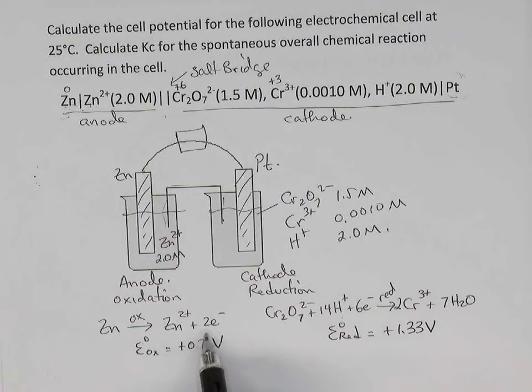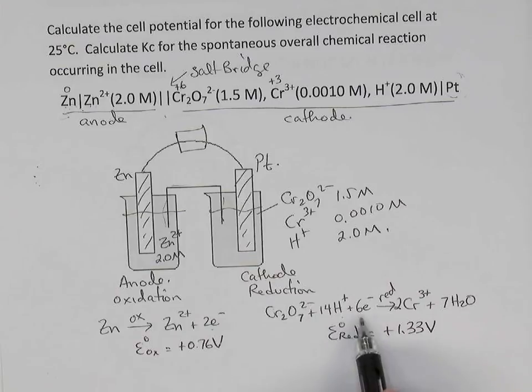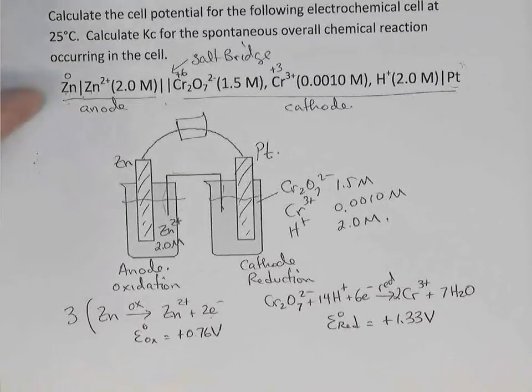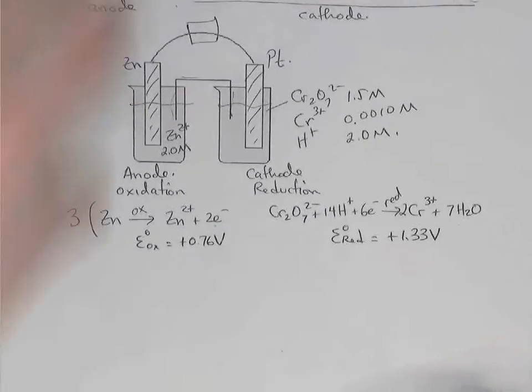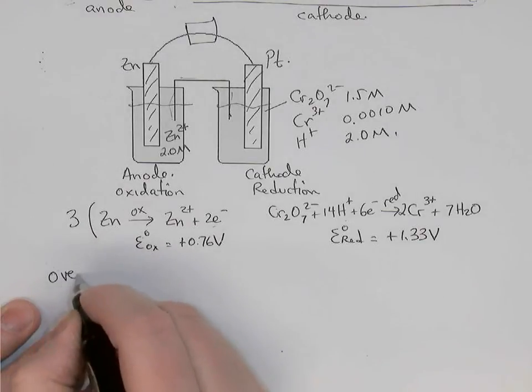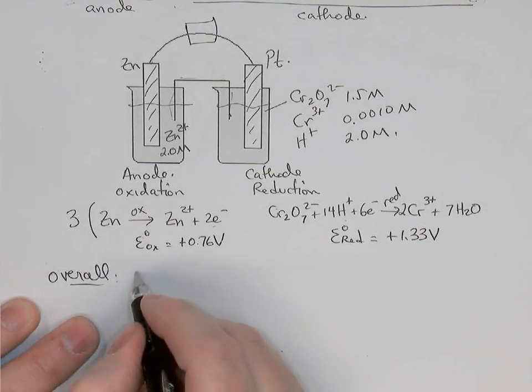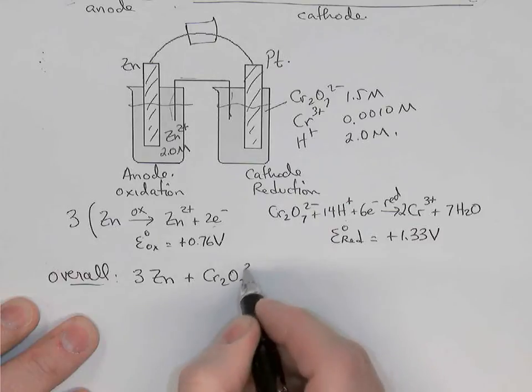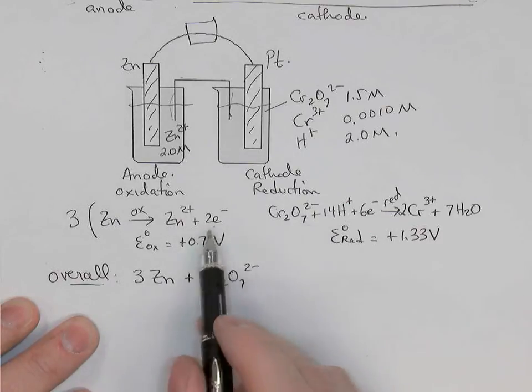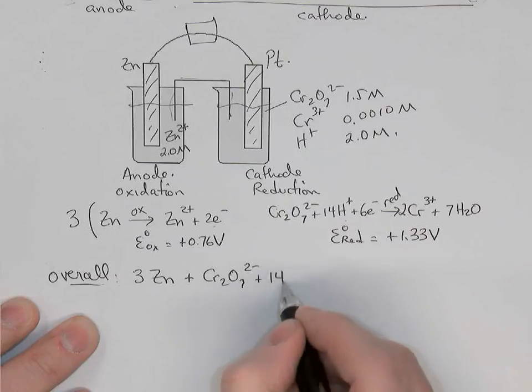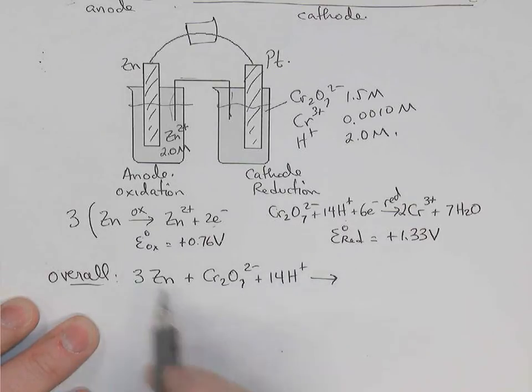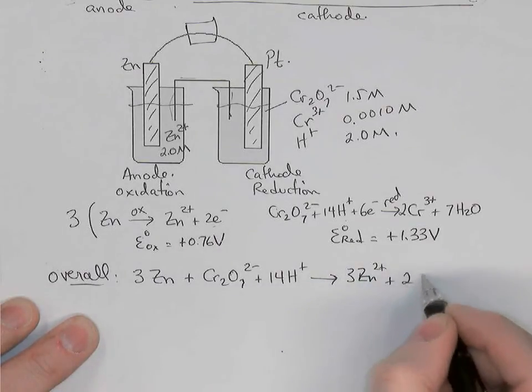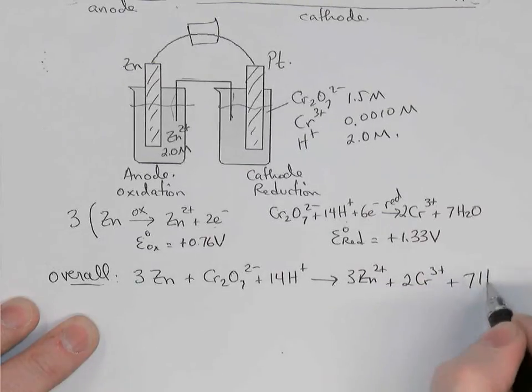Now the zinc equation is losing two electrons while the dichromate is gaining six electrons. So we'll need to multiply the zinc equation by three to make the electrons equal. And so now we can write an overall reaction. The overall equation will be three zincs react with the dichromate. The only thing that's going to cancel here when I recombine are the electrons. So plus the 14 hydrogen ions produces three zinc 2+, the two chromium 3+, and the seven waters.